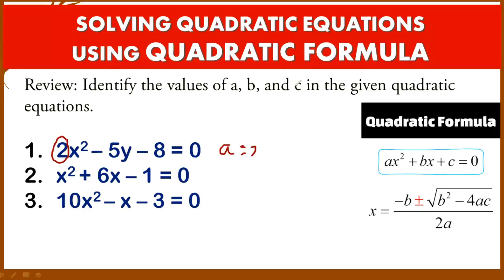So that A is 2. Our B is denoted by the constant term in our linear term — that is negative 5. Our C, our constant, is negative 8. That's for number 1.